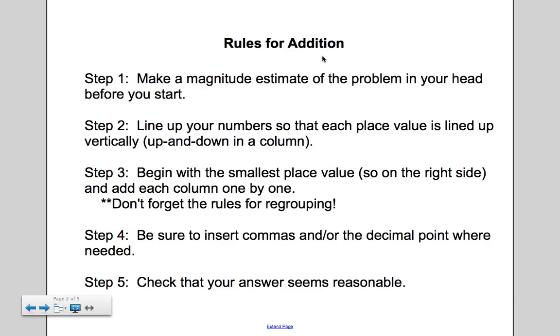Step two is to line up your numbers so that each place value is lined up vertically, which means up and down in a column. So you're going to have to make sure that you've got tens lined up, ones lined up, tenths lined up, whatever place values are in your number. And when you're adding with decimals, that means that your decimal points are going to be lined up. So make sure you've got those decimal points in a line.